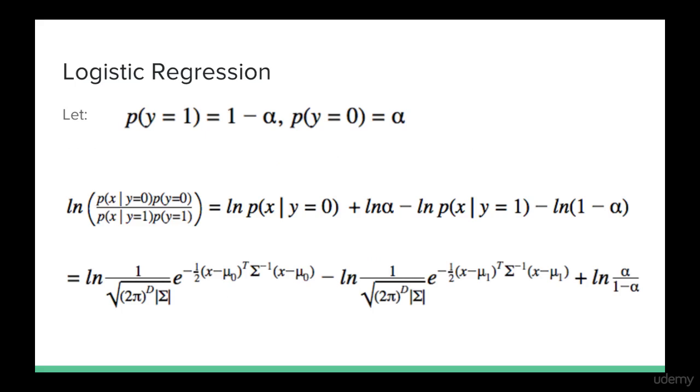The next step is to let p of y equals 1, equal 1 minus alpha, and p of y equals 0, equal alpha, so our equations can look a little simpler. Next, we can expand everything inside the log, because it's all multiplication and division, which gives us this equation.